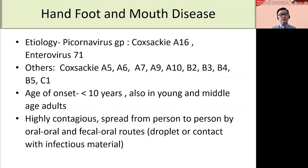Now I'd like to move on to the second condition that can present with vesicles mimicking monkeypox — hand, foot, and mouth disease. Hand, foot, and mouth disease is caused by Picornavirus, in particular Coxsackie virus A16 and Enterovirus 71. However, other serotypes have been identified, including Coxsackie A5, 6, 7, 9, 10, B2, 3, 4, 5, and C1. These serotypes depend on the region of the outbreak.